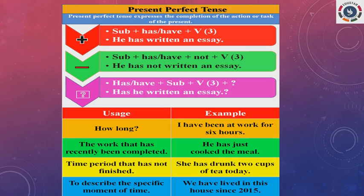Has or have: 'has' is used for singular subjects and 'have' is used for plural subjects. But the exception is 'I' and 'you' — singular — use 'have.' So for usage: if you are asking 'how long,' present perfect is used. For example, 'I have been at work for 6 hours.'